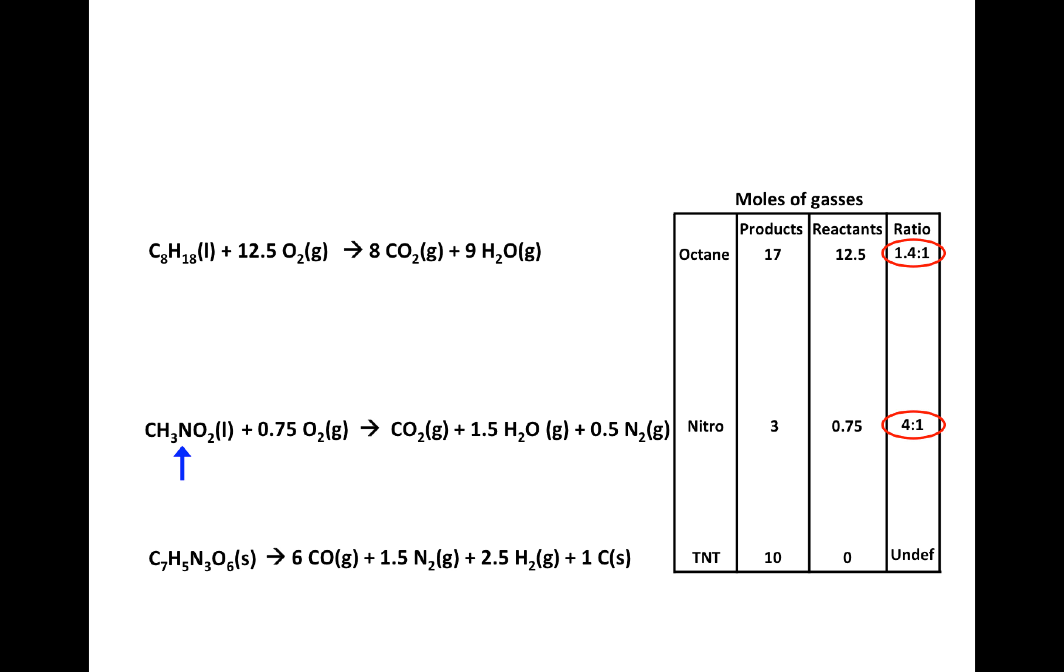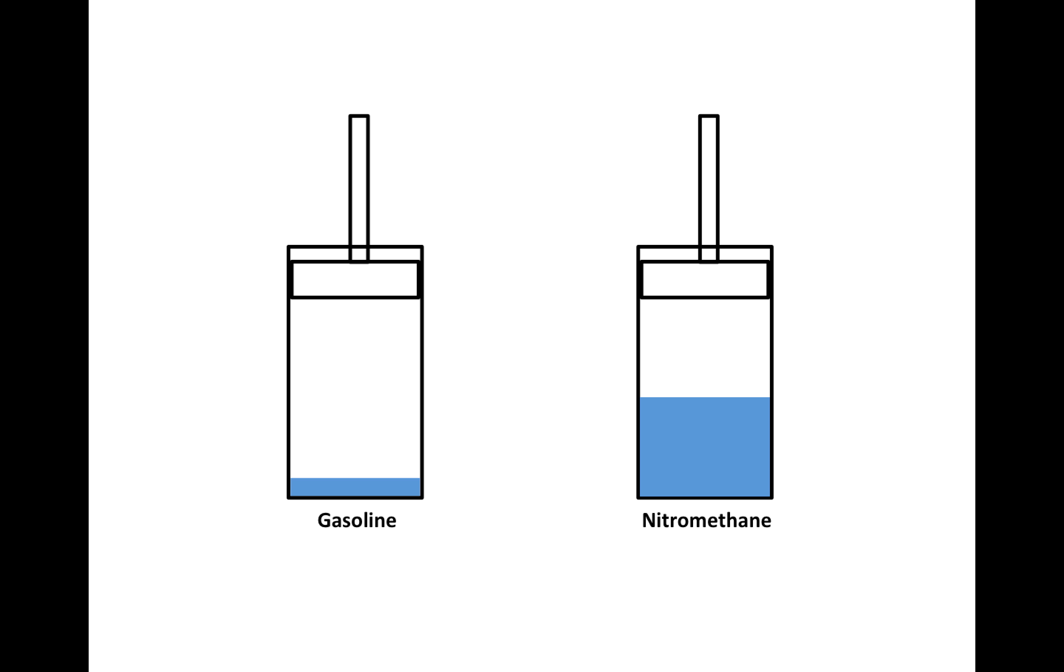So with my nitromethane, since some of the oxygen needed for the reaction is already in the molecule, I don't have to bring in too much oxygen from the outside, whereas with my octane there is no oxygen in the molecule and all of the oxygen has to come in from the outside.